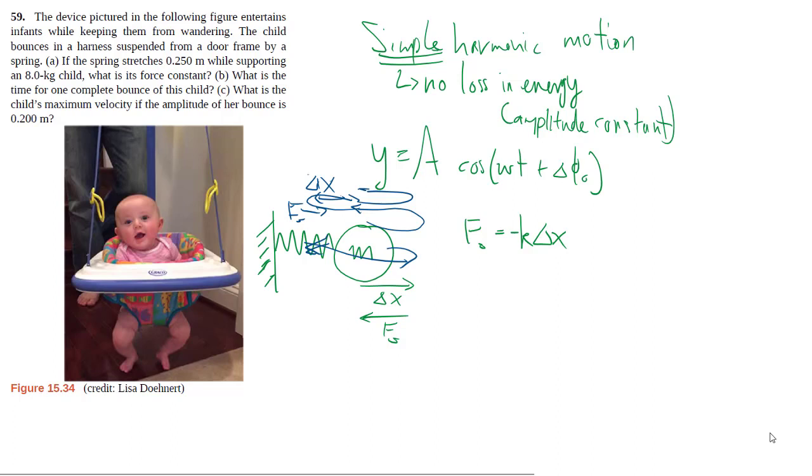The last thing about the spring mass system is you can figure out the frequency based on the mass and the spring. This frequency, specifically angular frequency for spring mass systems, is related to the spring constant and the mass with a square root sign.